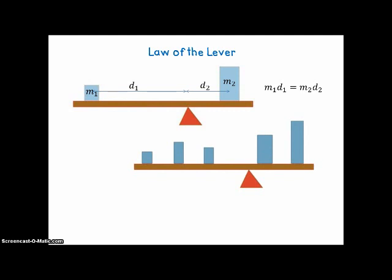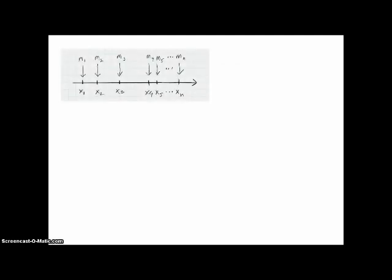Using that idea, what if you have several weights? The sum of the masses times the distances on the left should equal the sum of the masses times the distances on the right. If we extend this to the Cartesian plane and think of a mass value at each x-value, then the total mass is just the sum of all those masses. The total mass times the balancing x-bar equals the sum of all the separate masses times the x-values. That's how we define x-bar.